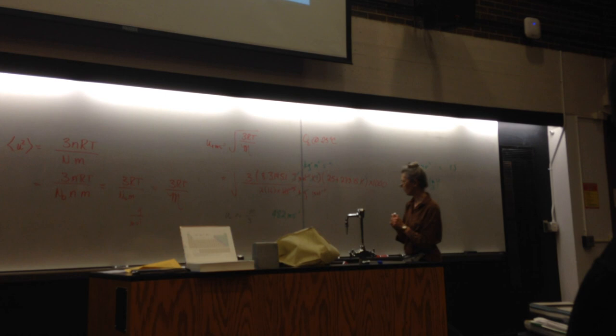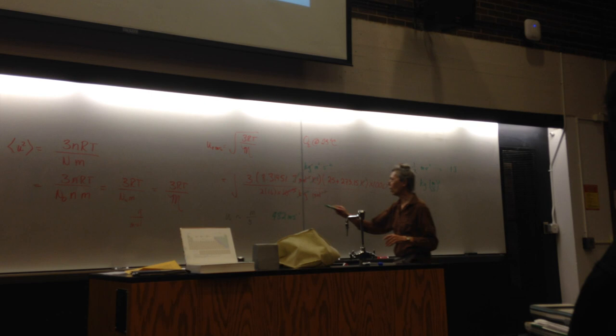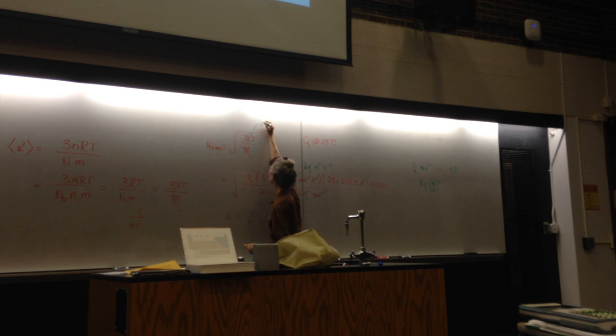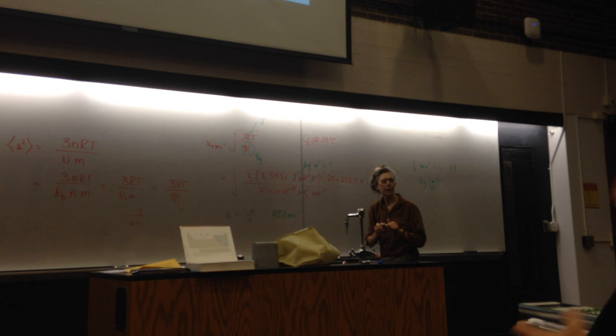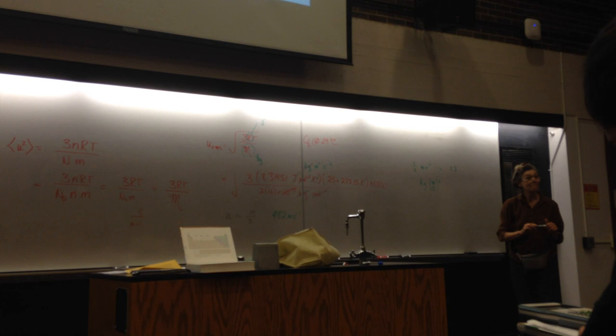So, the two things with all the kinetic theory formulas are what's your value of R? Must be in joules. Molar mass - you have to have kilograms. Those are two common errors.